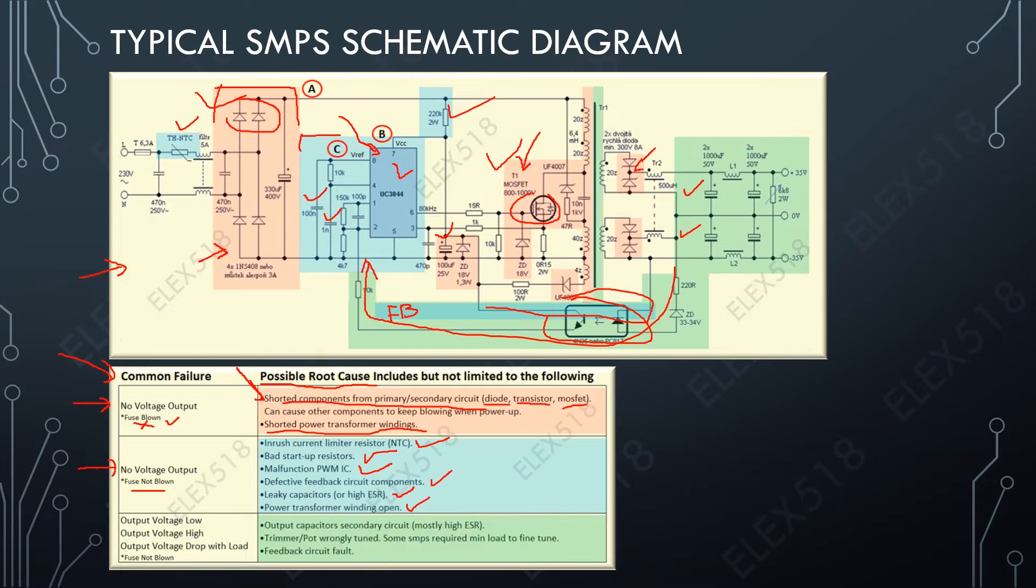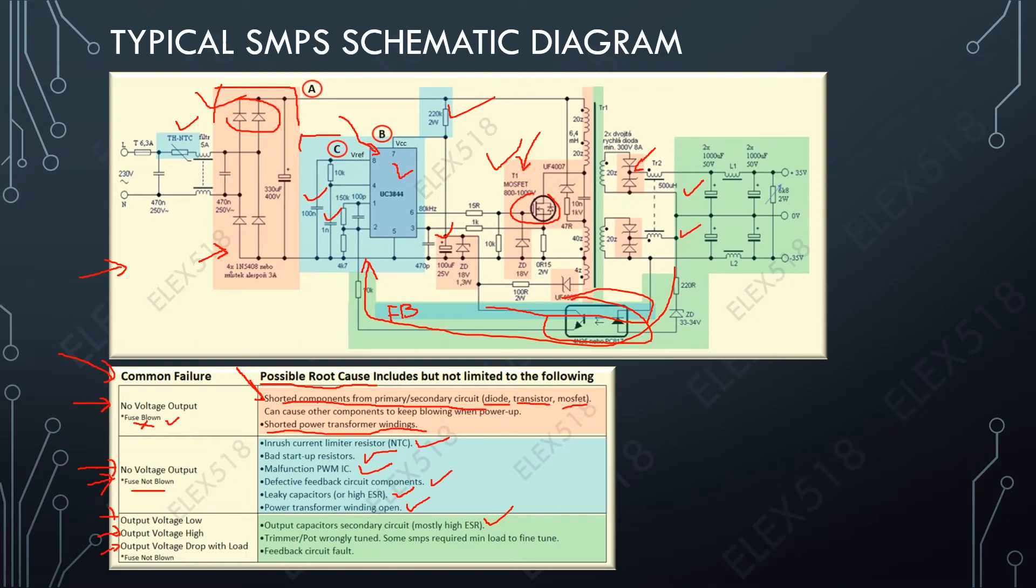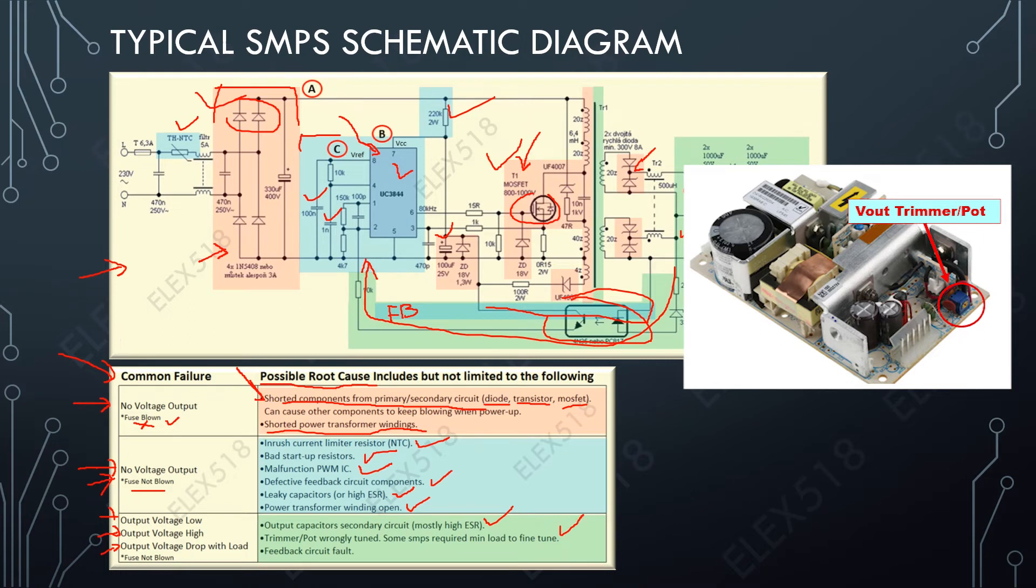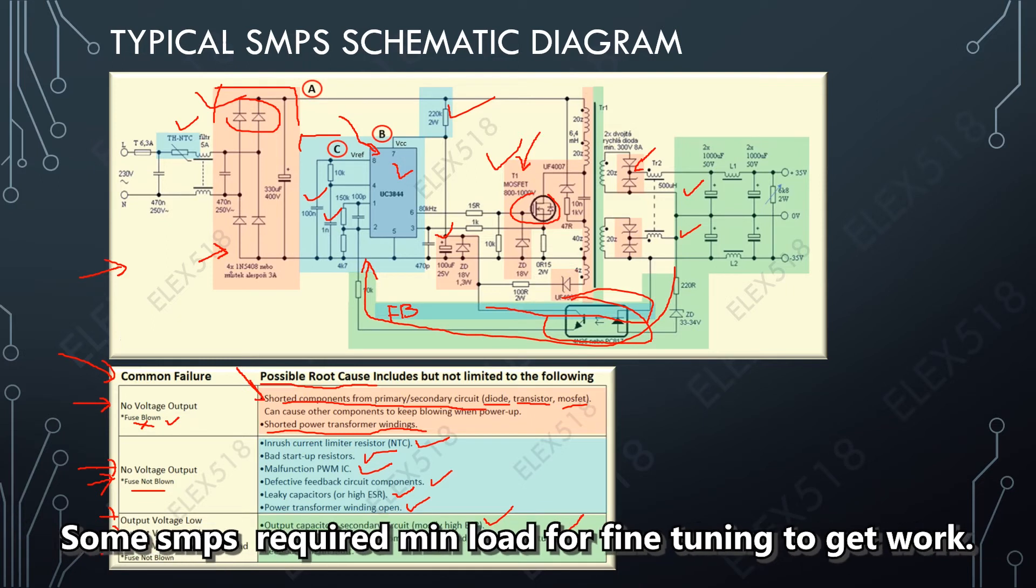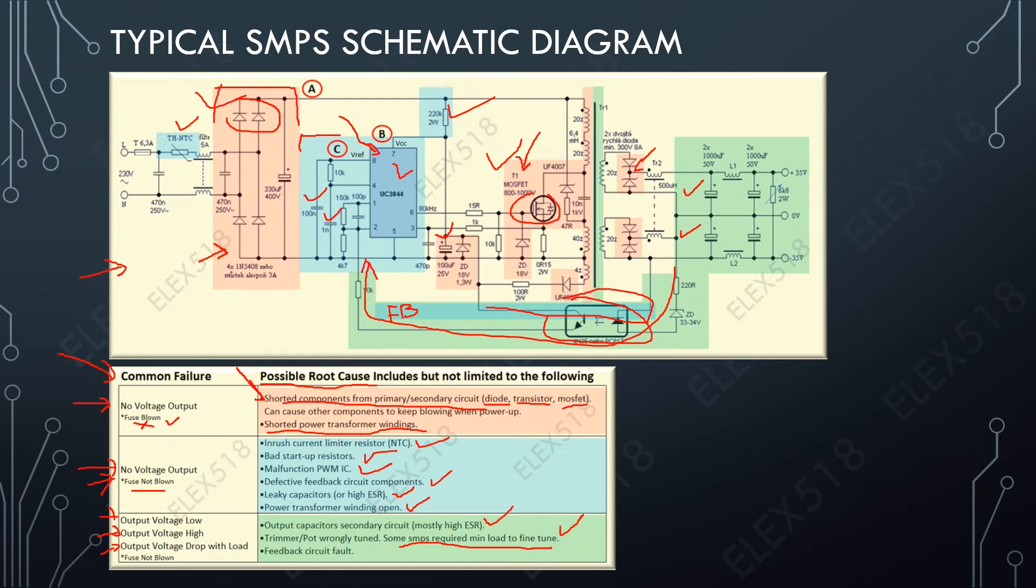The third one is output voltage low, output voltage high, or output voltage drop with load. It means the voltage output is okay, but when you put a load the voltage drops. The potential root causes are the output capacitors, and another potential root cause is the trimmer or pot is wrongly tuned. Take note that some SMPS need a minimum load in order for the fine tuning circuit to work. The last potential root cause in our list is the feedback circuit area.